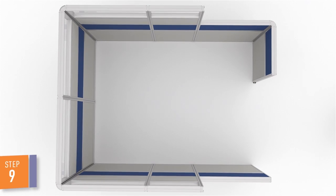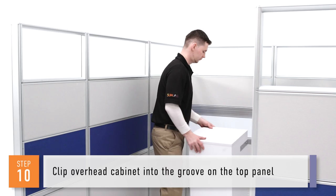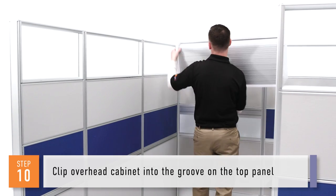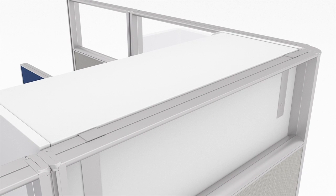Now, once all walls are built, place any weight-bearing file cabinets. Step ten. If your plan calls for an overhead cabinet, clip the overhead cabinet into the groove on the top panel. We recommend securing the overhead into the panel using self-tapping screws for safety precautions.